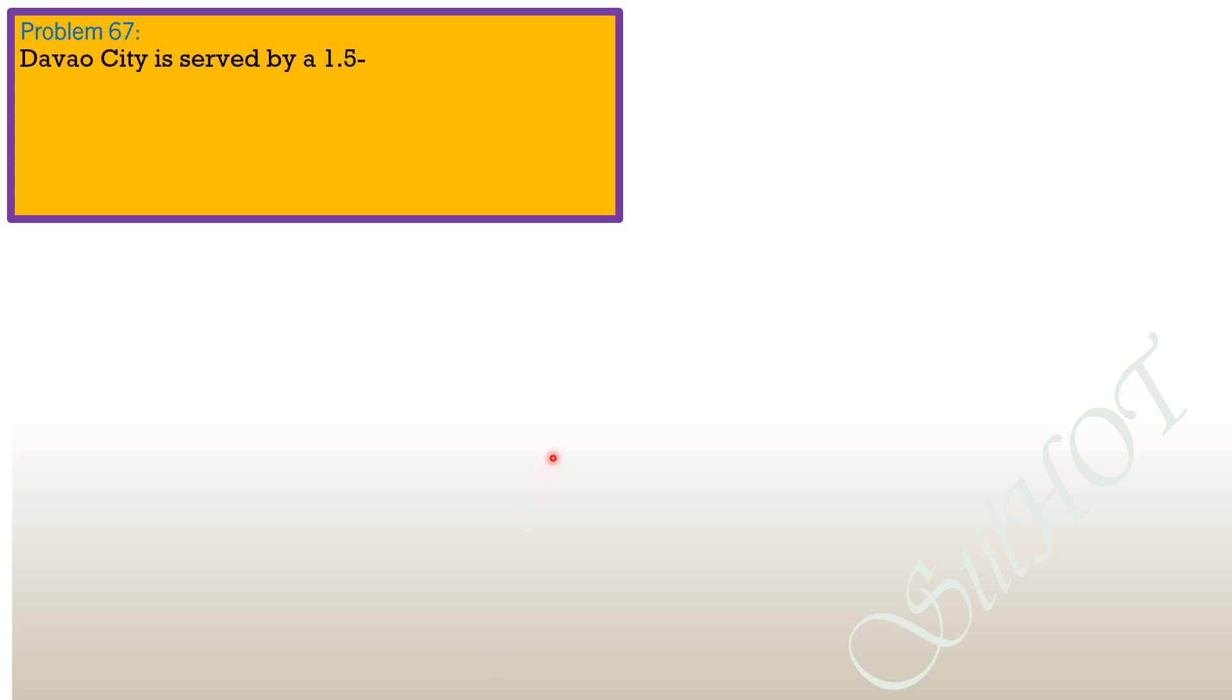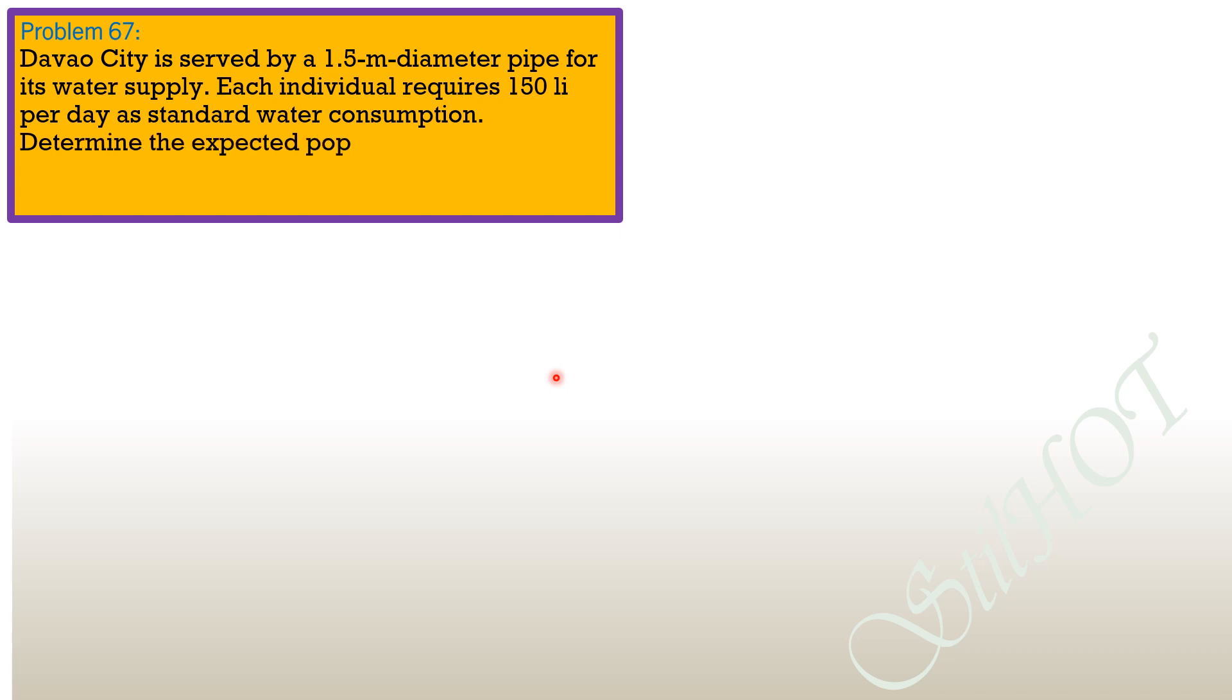Problem 67: Davao City is served by a 1.5-meter diameter pipe for its water supply. Each individual requires 150 liters per day as standard water consumption. Determine the expected population that can be served by such pipe if the mean velocity of flow in the pipe is set at 1.8 meters per second.